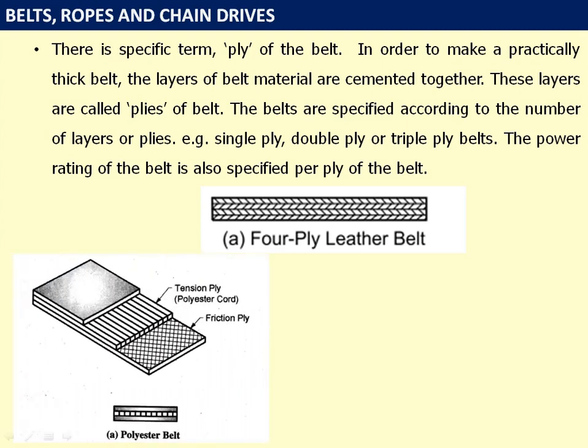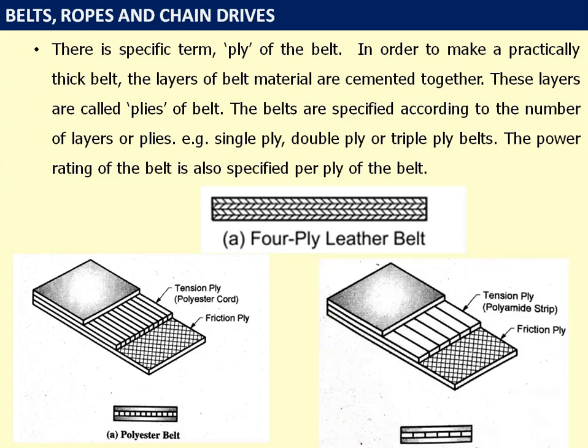Now let us see the construction of polyester belt. The tension ply made up of polyester cord is sandwiched between the friction plies at the bottom and the top — hence it is called a polyester belt. In polyamide belts, the polyester strip is replaced by a polyamide strip and it is bound between the upper and lower friction plies.